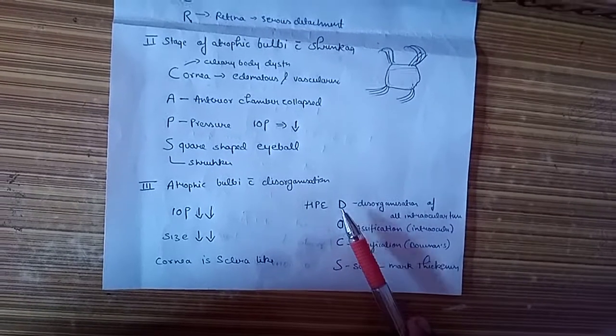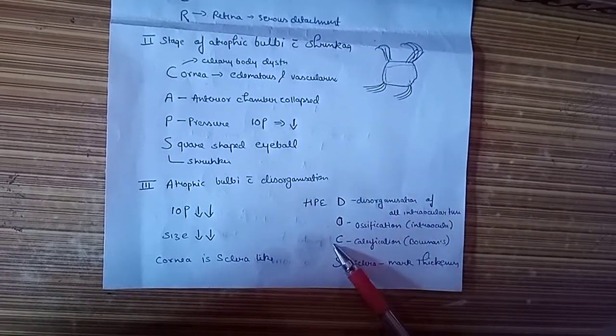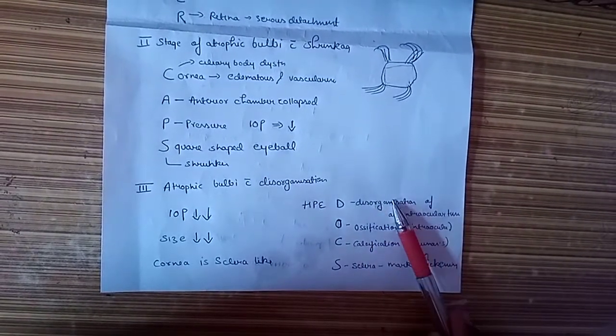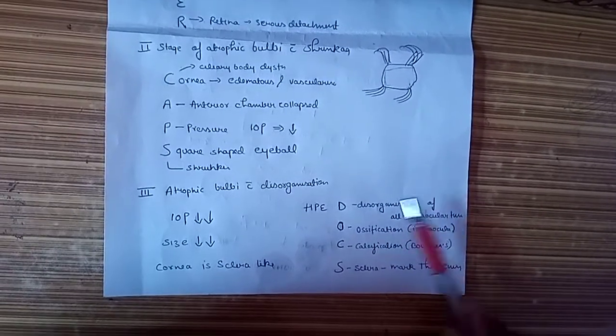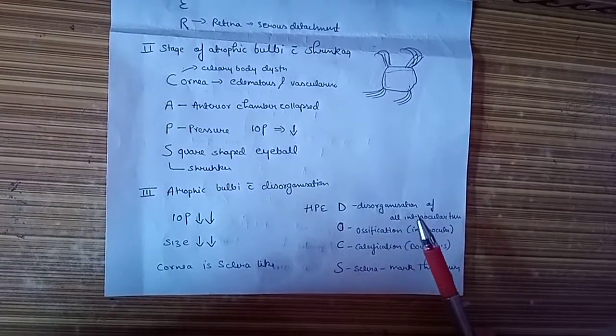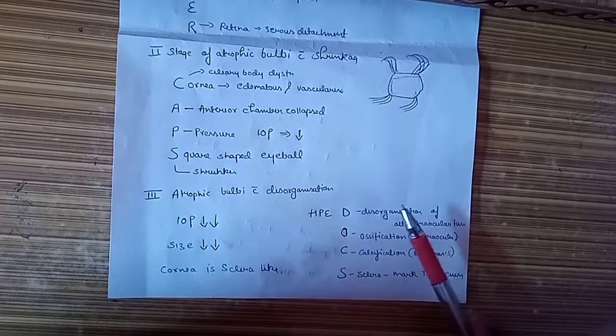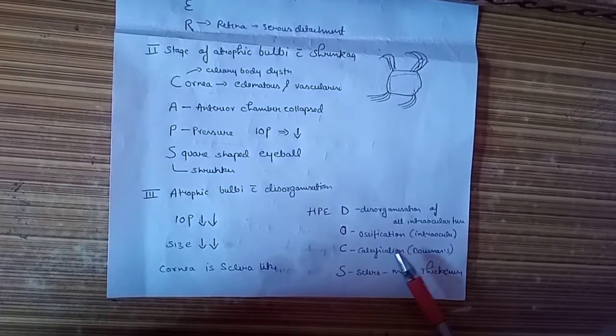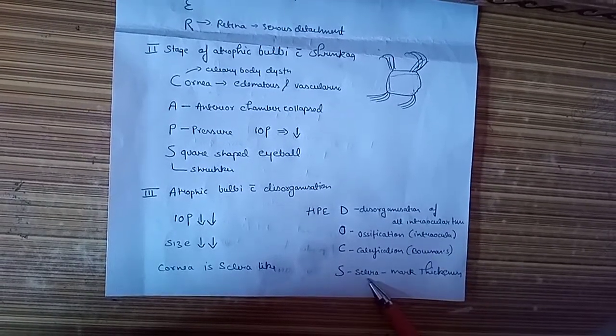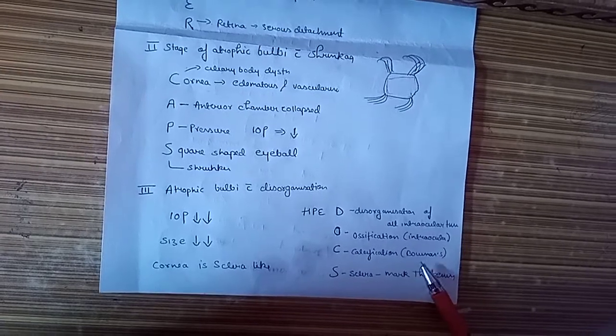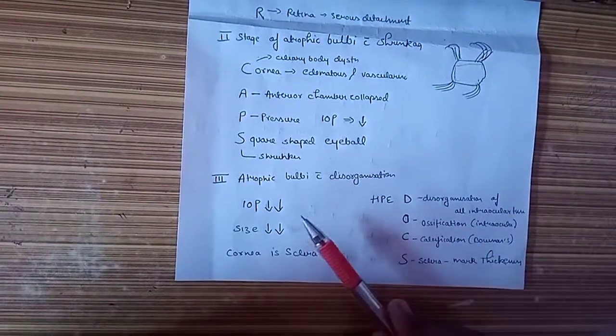DOCS means doctor: D for disorganization of all intraocular tissue, O is for ossification that occurs, intraocular calcification of Bowman's layer, and S is sclera is markedly thickened.